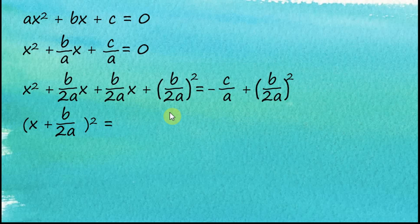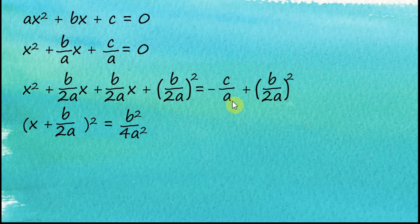For the right-hand side, we find the square of the term first. So (b over 2a)² becomes b² over 4a². To solve the addition of fractions, we need the same denominators. The common denominator is 4a². To convert the negative c over a term, we multiply both numerator and denominator by 4a to get the denominator 4a².